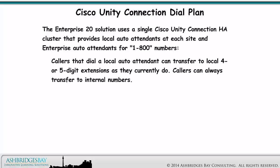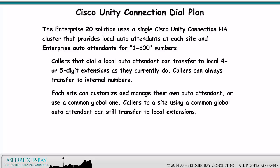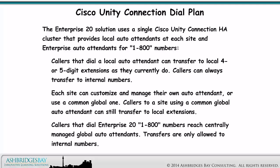The Enterprise 20 solution uses a single Cisco Unity Connection HA cluster that provides local auto-attendants at each site and enterprise auto-attendants for 1-800 numbers. Callers that dial a local auto-attendant can transfer to local 4- or 5-digit extensions as they currently do. Callers can always transfer to internal numbers. Each site can customize and manage their own auto-attendant or use a common global one. Callers to a site using a common global auto-attendant can still transfer to local extensions. Callers that dial Enterprise 20 1-800 numbers reach centrally managed global auto-attendants, where transfers are only allowed to internal numbers.